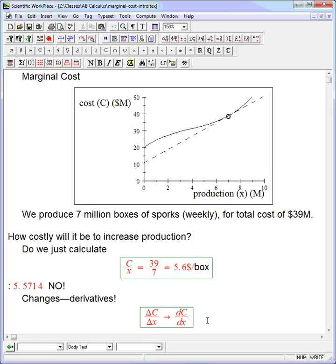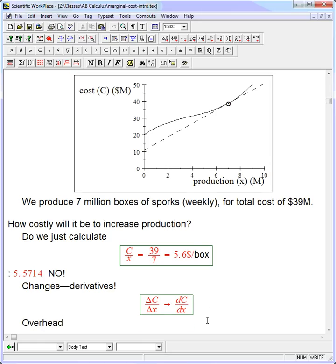Let me actually write that down. I've mentioned this in class. These words, overhead or fixed cost, that's the C of zero, and that's what's immaterial to this problem. It's very material if you can start a new factory, but if the factory is already there, that's not going to be important.